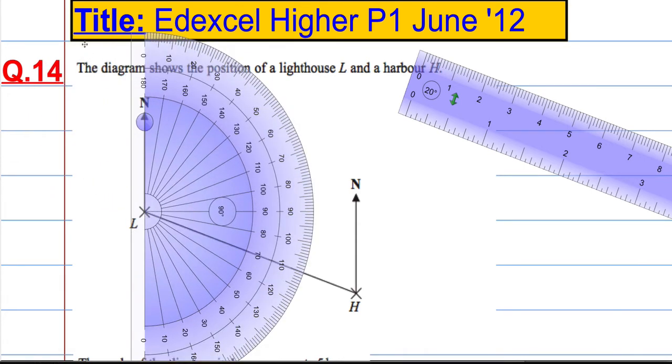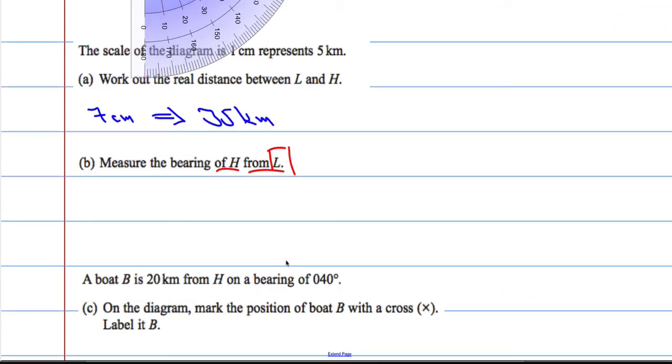Keep on going. So that. There we go. We're going to measure from the 0 on this track and work all the way around. And I make that out to be 110 degrees. So 110 degrees.